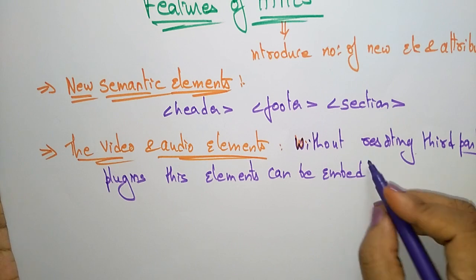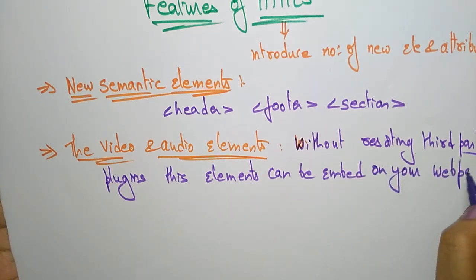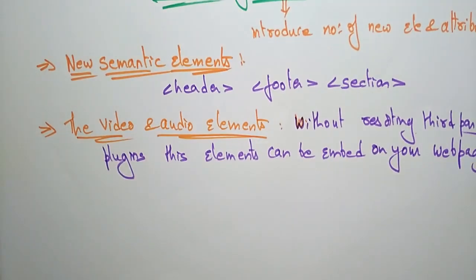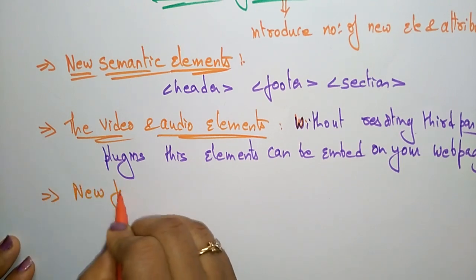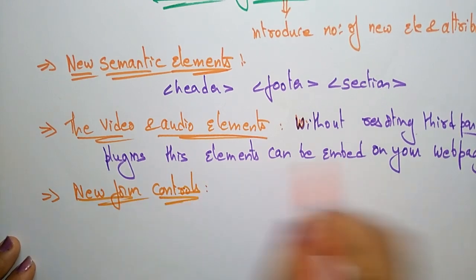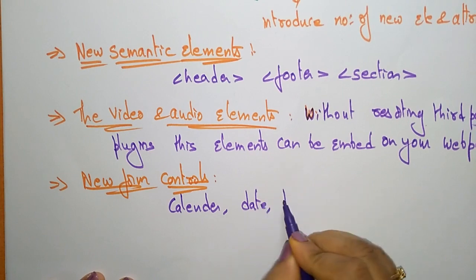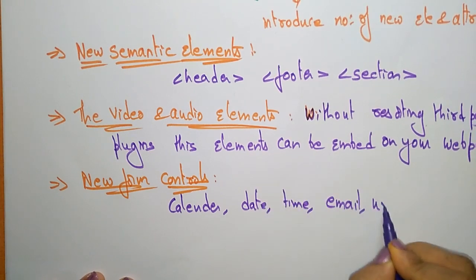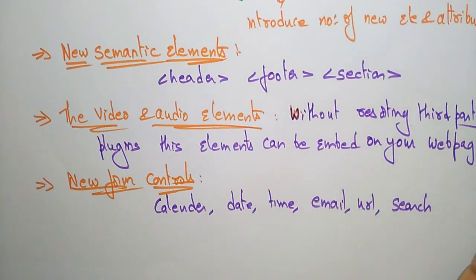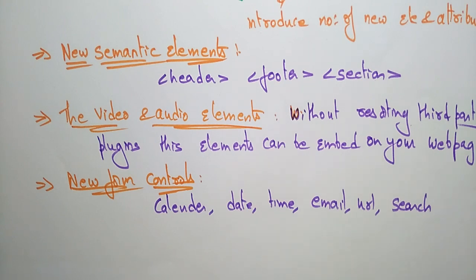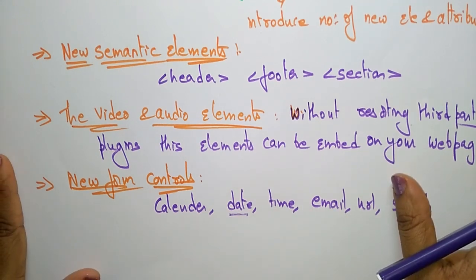This is one of the features of HTML5 — new semantics and the video and audio elements. Next, there are new form controls. Compared to HTML4, HTML5 provides new form controls like calendar, date, time, email, URL, and search. For example, whenever you use a date input, the calendar will be displayed automatically with the current date. These are all the new form controls, one of the latest features of HTML5.